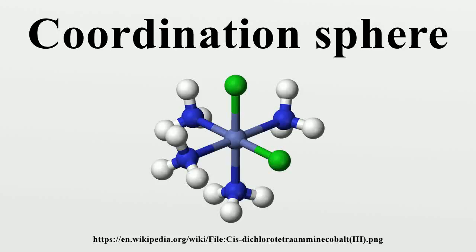In coordination chemistry, the coordination sphere refers to a central atom or ion and an array of molecules or anions. The ligands around molecules that are attached non-covalently to the ligands are called the second coordination sphere. The first coordination sphere refers to the molecules that are attached directly to the metal. These molecules are typically solvent. The interactions between the first and second coordination spheres usually involve hydrogen bonding. For charged complexes, ion pairing is important.